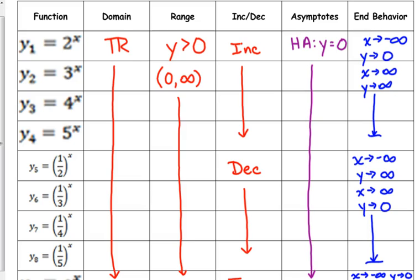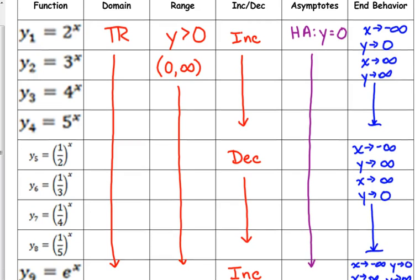The bases, when they're greater than 1, it's increasing. We've just talked about that. When they're less than 1, it's decreasing. e to the x, we're actually going to look at that graph here. e to the x is also increasing.